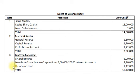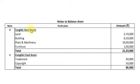Note number 3 is for Long-Term Borrowings: 8% Debentures Rs.5,00,000; Loan from State Finance Corporation Rs.3,00,000 minus interest accrued Rs.20,000 equals Rs.2,80,000; and Unsecured Loans Rs.2,42,000 — total long-term borrowings Rs.10,22,000. Note number 4 is for Tangible Fixed Assets: Land Rs.3,70,000, Building Rs.6,50,000, Plant and Machinery Rs.10,00,000, and Furniture Rs.1,00,000 — total Rs.21,20,000. Note number 5 is for Intangible Fixed Assets: Trademarks Rs.30,000 and Copyrights Rs.50,000 — total Rs.80,000.